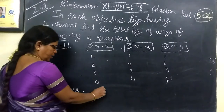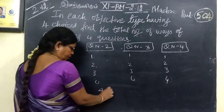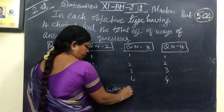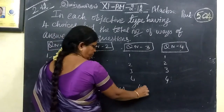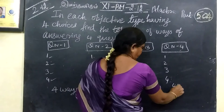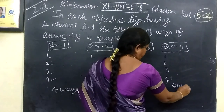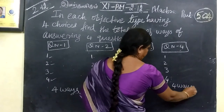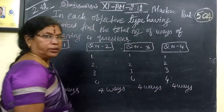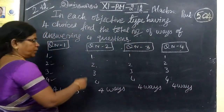Each question can be answered in 4 ways. This can be done in 4 ways, and this can be done in 4 ways, and this can be done in 4 ways. So together, we need to combine all of these.